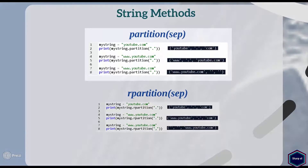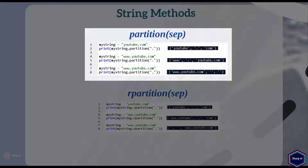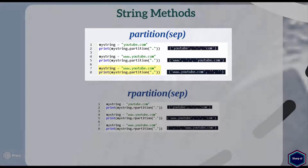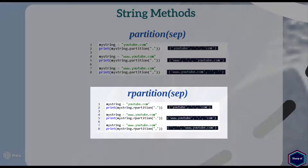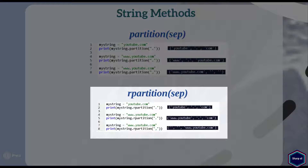Now let's move to the next method: partition. It takes a single argument separator and returns a tuple that contains the string before the separator, the separator itself, and the string after the separator, as shown in this example. If there is no such separator in the string, the tuple returned by partition contains the original string followed by two empty strings. The rpartition method is very similar to partition but the search for the separator begins from right to left, as shown in these examples.